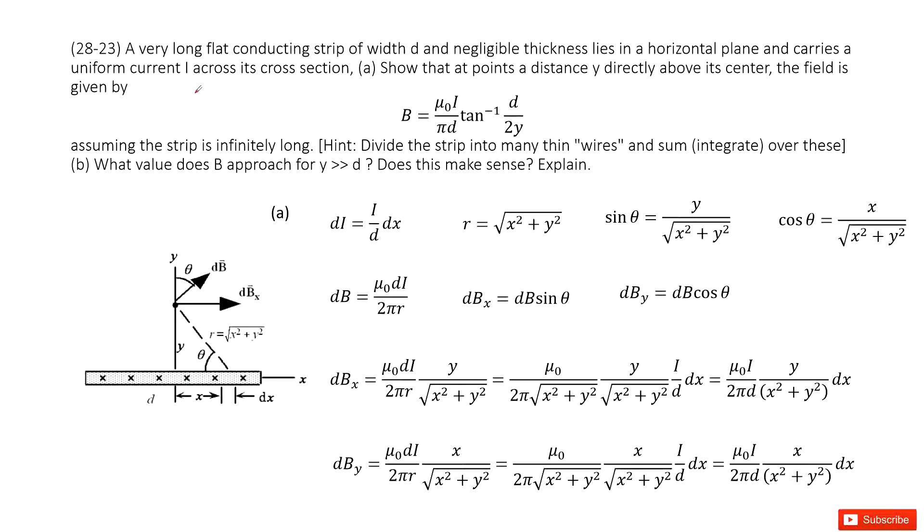Now we have the current i across its cross section. That means the current uniformly flows through it, just flows in or flows out. Now we need to determine the magnetic field at position y. So how can we do that?